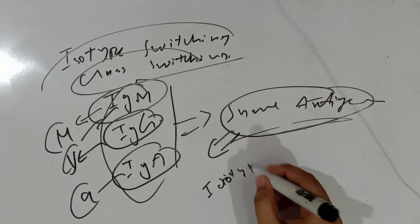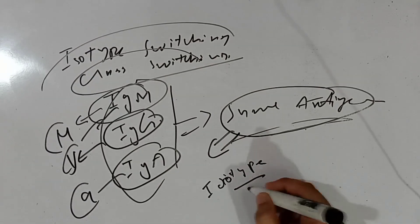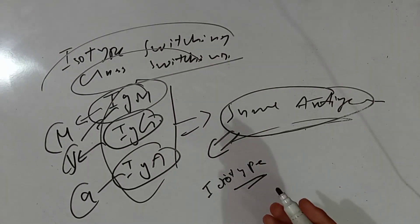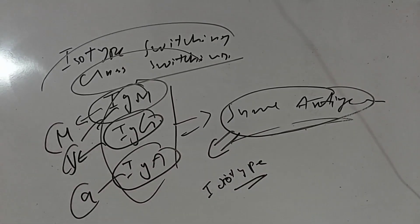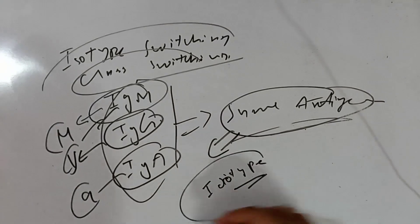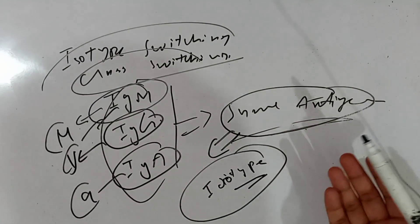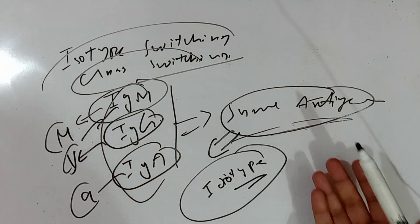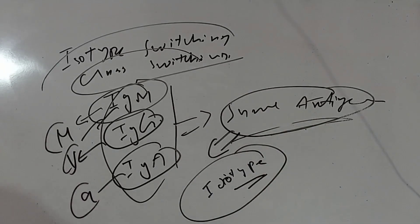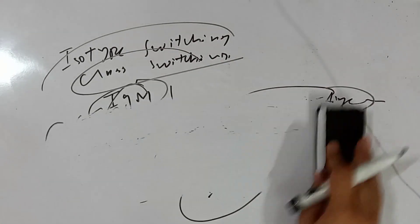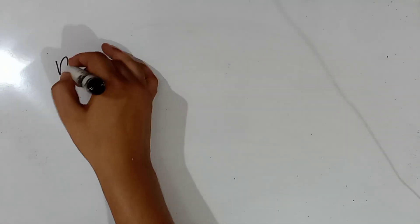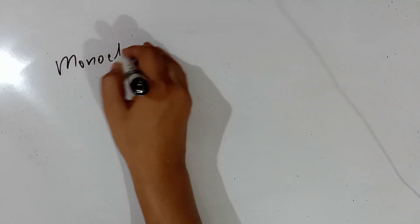Idiotype refers to the antigenic determinant found in specific amino acid sequences in the variable region of antibodies, which identifies specific antigens. Antibodies sharing the same variable region sequence have the same idiotype.